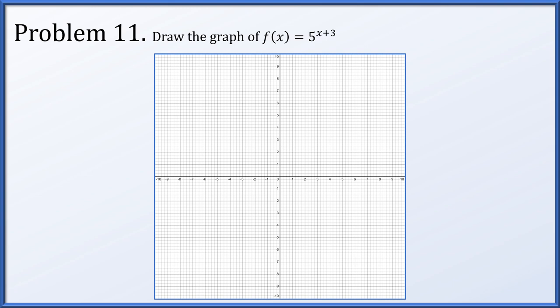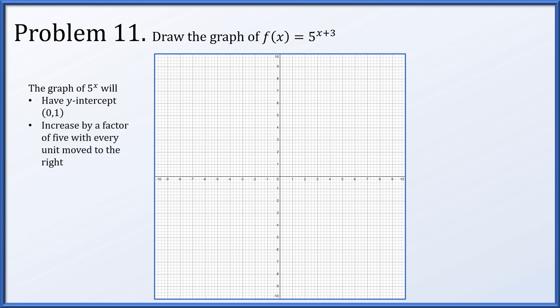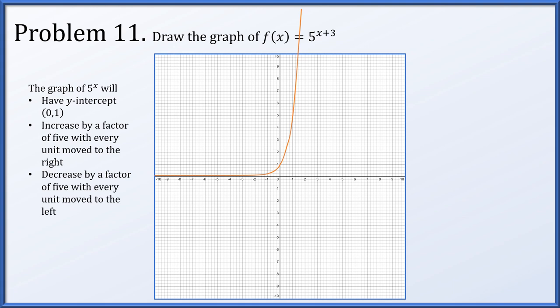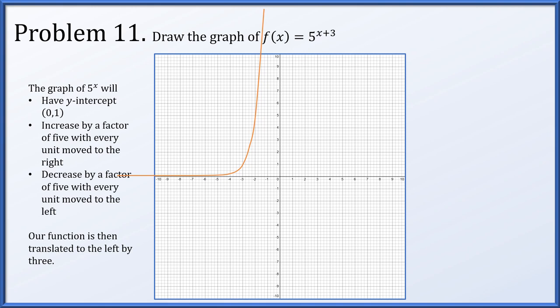Problem 11: draw the graph of f(x) = 5^(x+3). The graph of 5^x has intercept (0,1), increases by a factor of 5 every unit to the right, and decreases by a factor of 5 every unit to the left. It passes through (1, 5) and reaches height 25 at x = 2, while at x = -1 it's at 1/5, collapsing toward 0 but never touching the axis. Our function 5^(x+3) is this graph translated 3 units to the left.